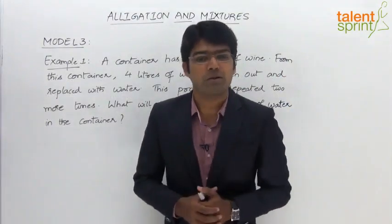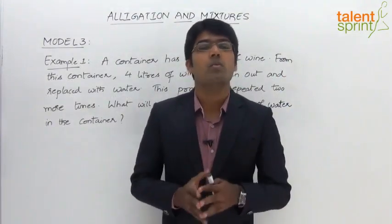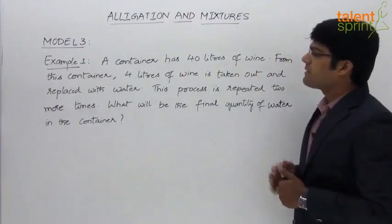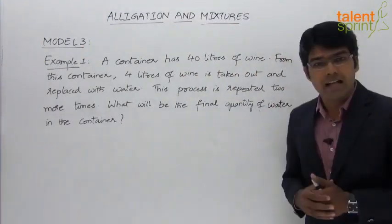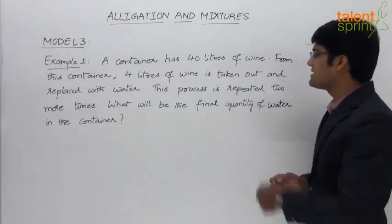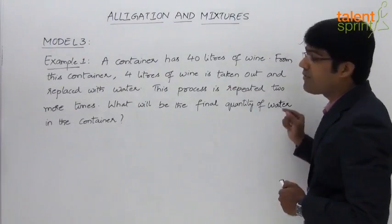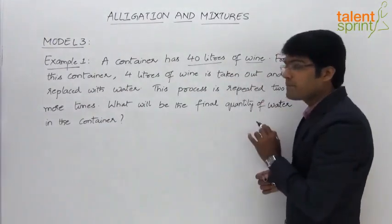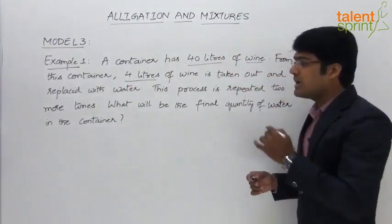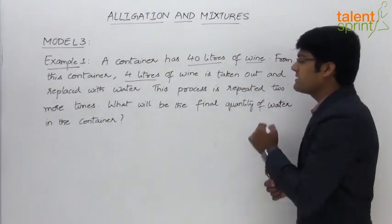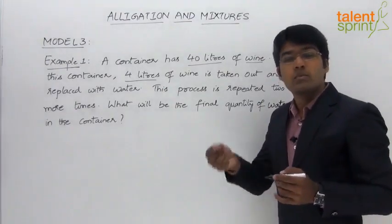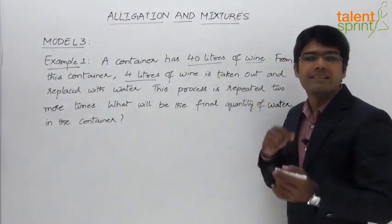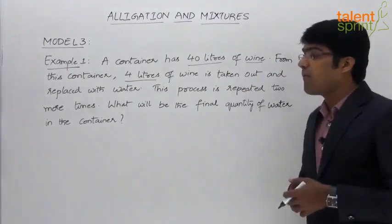Let us now take the first example from Model 3 of allegations and mixtures, based on the removal and replacement concept. The question is: a container has 40 liters of wine. From this container, 4 liters of wine is taken out and replaced with water. This process is repeated 2 more times. What will be the final quantity of water in the container? Initially the operation is done once and then repeated 2 more times, so the removal and replacement has taken place a total of 3 times.